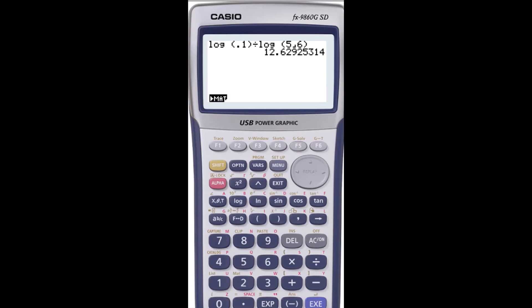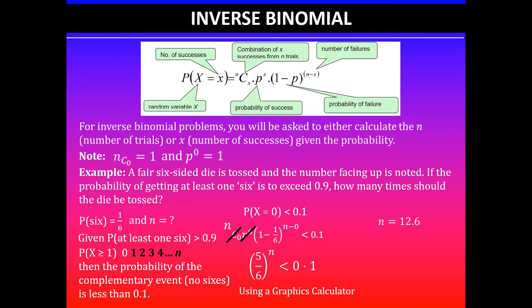So I'd suggest you can use either of the two methods, but using equation solver is quick and easy. You don't need to worry about your algebraic skills. Using the graphics calculator we get the n value of 12.6, and we'll round this to a whole number because we cannot have a decimal number of trials. So in this case n value is 13, and then we write the answer in context. The die should be tossed 13 times.